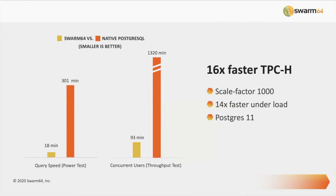What can you expect in terms of results? In the TPCH benchmarks at scale factor 1000 — which makes a terabyte of data — we run about 16x faster to execute the full suite of 22 queries. Some queries are a little bit faster than standard Postgres, a lot of them quite a bit faster, and some work 50x or higher. Overall you're talking about 18 minutes versus an hour and a half. This test was executed on Postgres 11 under load with about seven concurrent users — about 14x faster — but that's a rough benchmark of what you should probably expect.